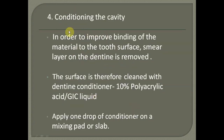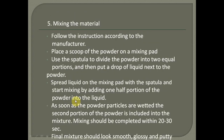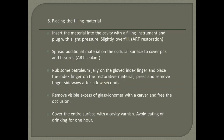The fourth step is cavity conditioning to improve the bonding of material by removing the smear layer of dentin. We use 10% polyacrylic acid or GIC liquid for this. Next, we mix the glass ionomer cement using the powder and liquid. The material is then placed into the cavity, and we can use instruments or even a thumb with petroleum jelly — using the cloud index finger to press and remove the finger sideways after a few seconds.